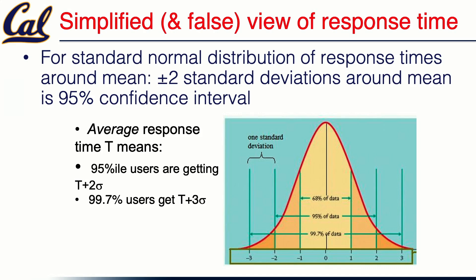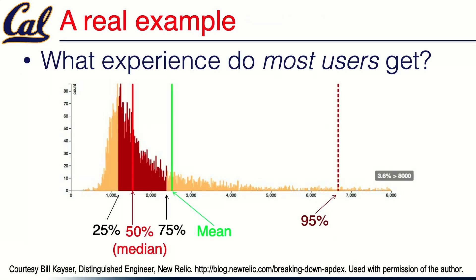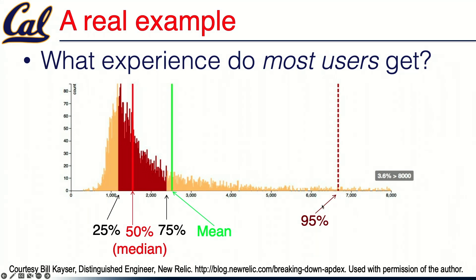The problem is that in real life, response time distributions don't look like a bell curve. They tend to have a much longer tail, where some users' response times are far higher than the mean or median. This is actually a real trace, used with permission from Bill Kaiser, who was a New Relic engineer at the time. If you look at this histogram, the median is down here but the mean is considerably higher. The point is you don't really care about the mean or median — you care about what most people experience. At the 95th percentile, the response time can be way out in the tail, so this changes how you evaluate and look for problems in response time.